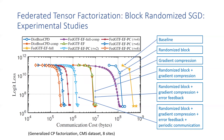We also see a continued reduction as we increase the number of local iterations between each communication round from two to eight. Overall, this result strongly verifies the benefit of the combined strategy for enhancing communication efficiency without compromising convergence and accuracy.